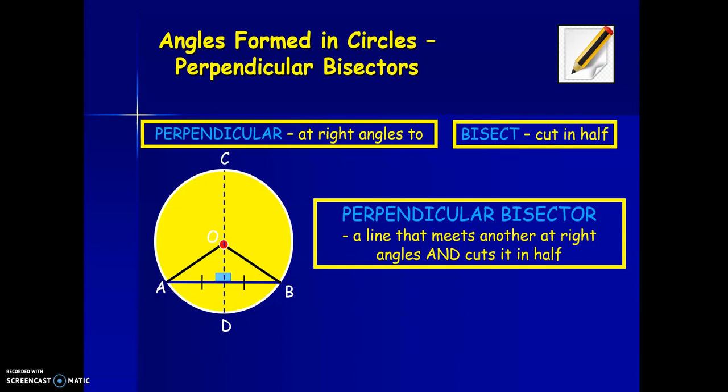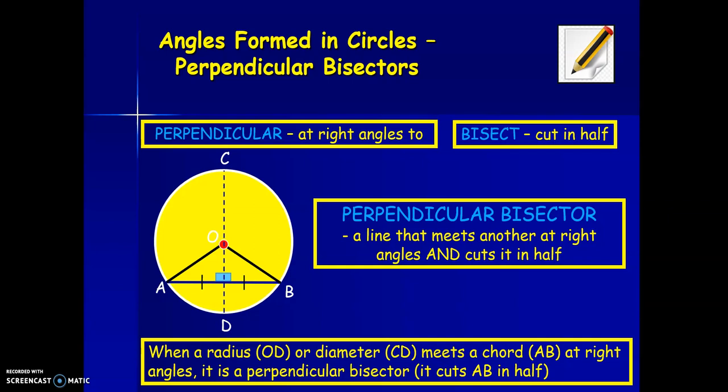If we look at the dotted line CD, it passes through the center. So this means that CD is a diameter and OD is a radius. Both these lines meet the chord AB, creating right angles. So this means that CD and OD are perpendicular bisectors. When a radius or diameter meets a chord at right angles, it is a perpendicular bisector.